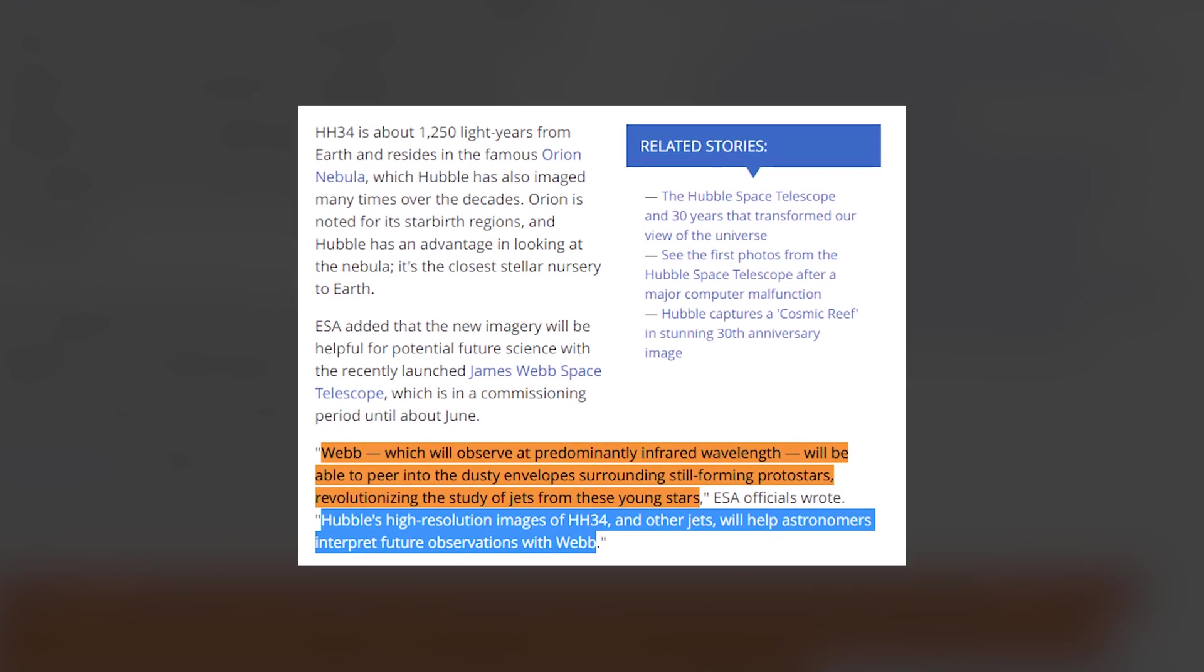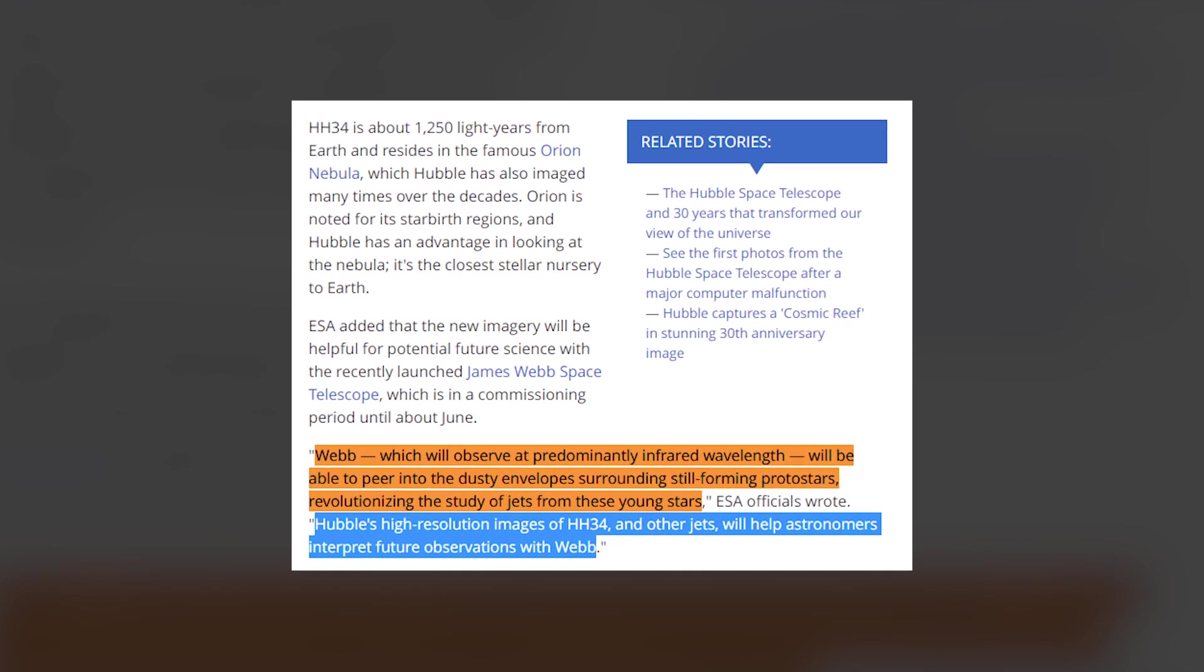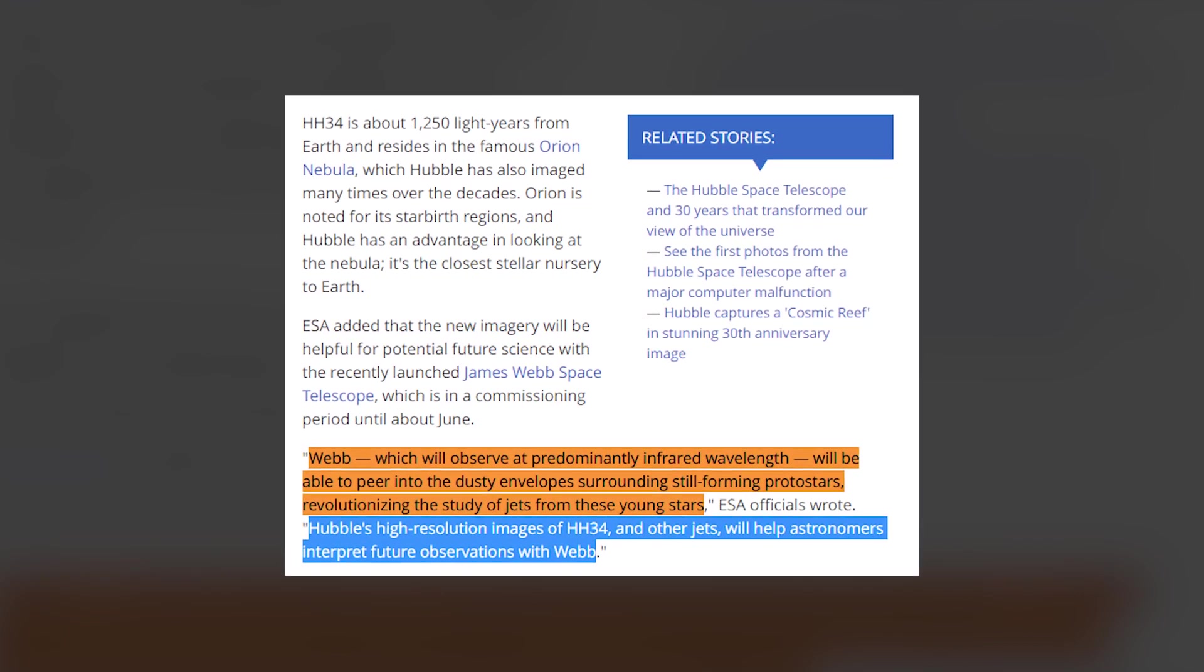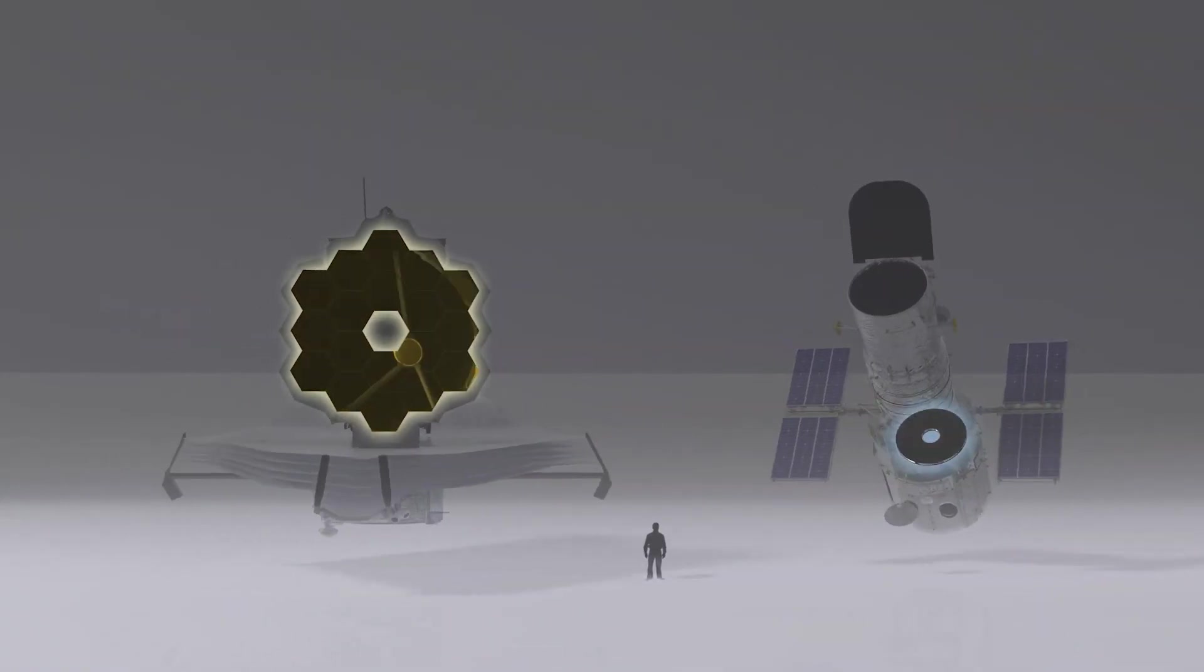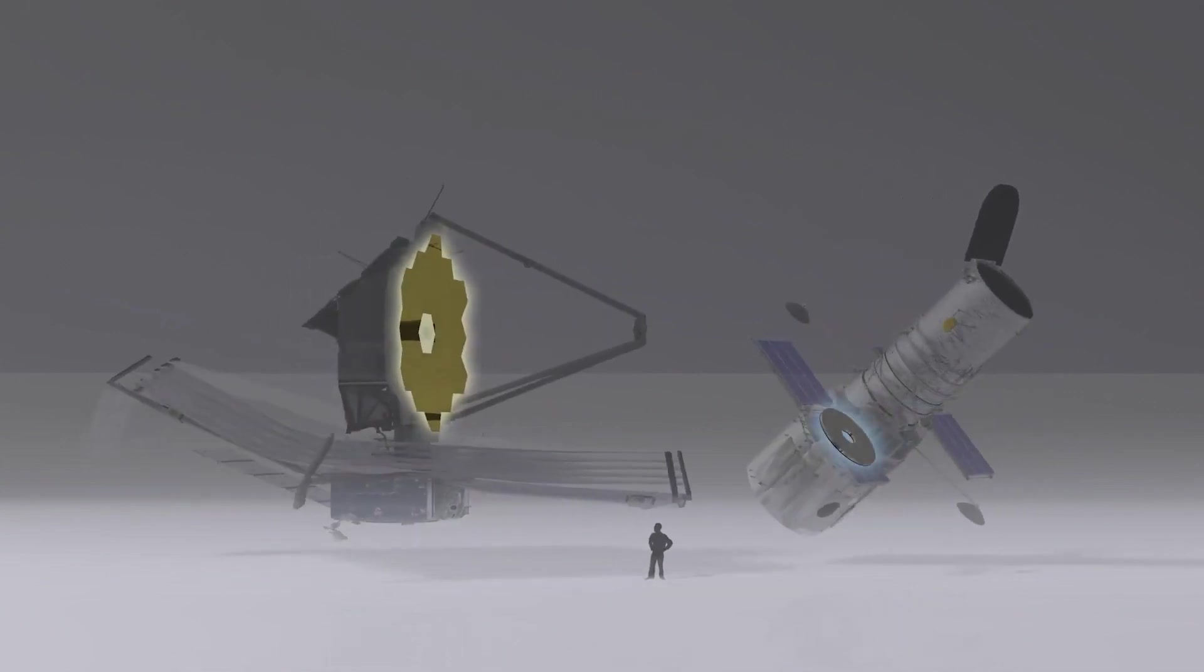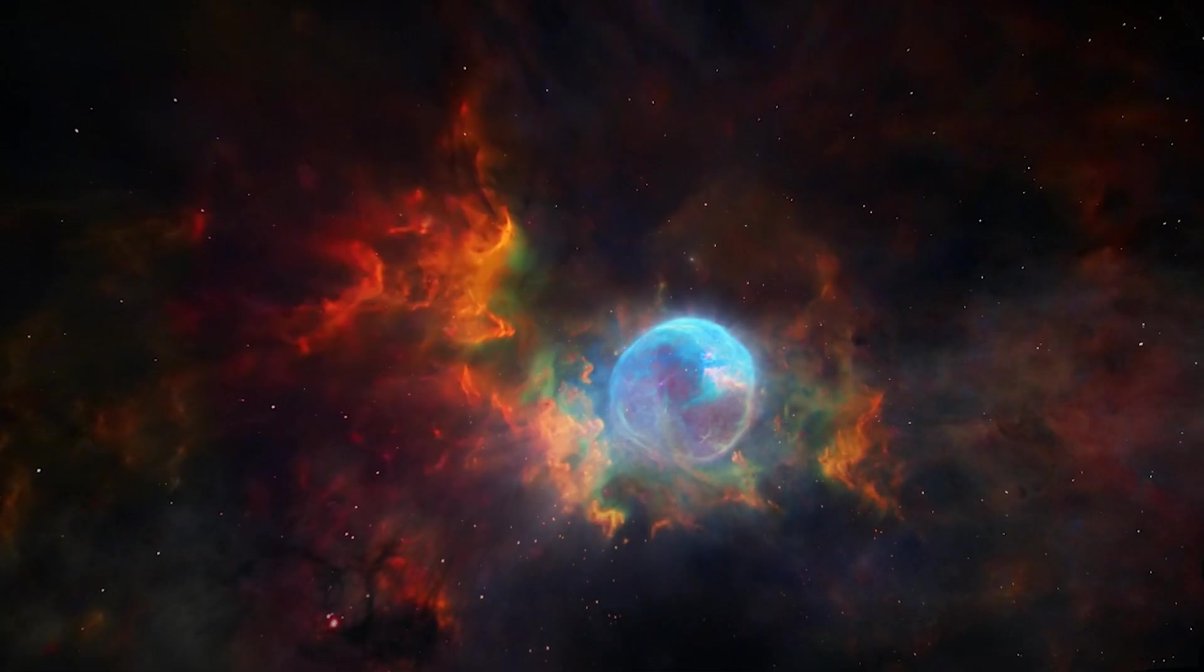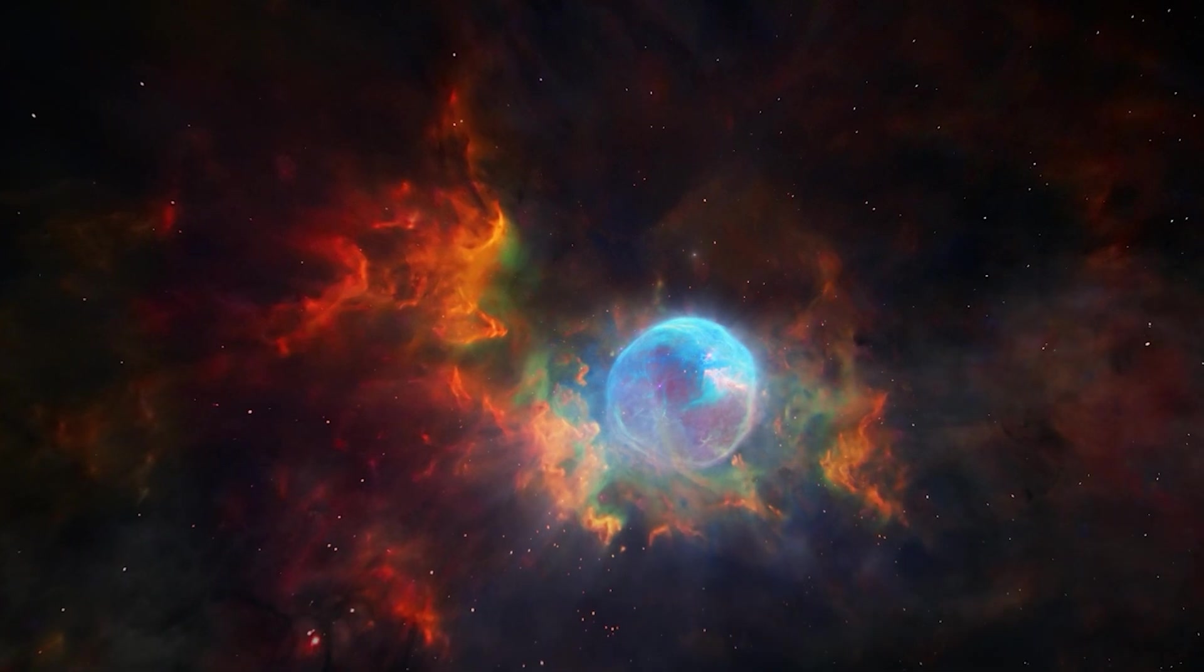Hubble's high-resolution images of HH34 and other jets will help astronomers interpret future observations with Webb. And that's honestly what they want. Between these two telescopes, they want to not only learn more about space, but be able to interpret all that's going on within these nebulas and other entities.